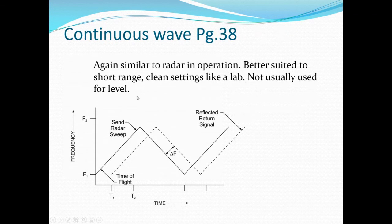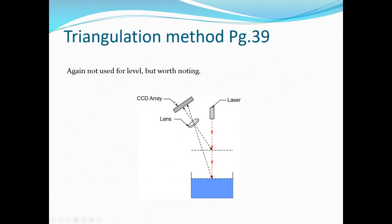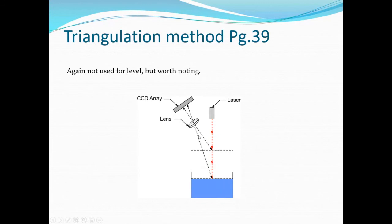Continuous wave lasers operate very similarly to radar — better suited for short ranges and clean settings like a lab, not typically used for field level measurement. The triangulation method uses an array of several detectors in one housing. As the level goes up and down, it changes the angle of reflection, focusing the beam on different sensors — giving quarter, half, three-quarters, full type readings.